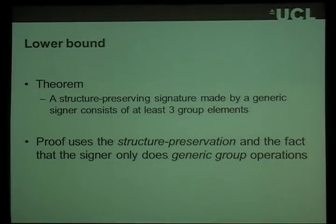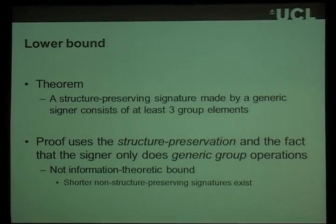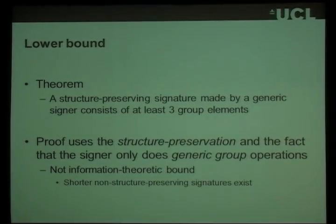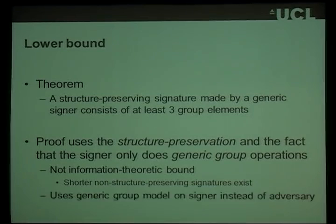The proof really uses structure-preservation in an essential way — specifically the fact that the signer only uses generic group operations. We need to use these properties because we already have examples of shorter signatures, but those examples reveal some exponents or use a hash function. The hash function is really good at destroying algebraic structure — it's structure-destroying, you could say. We also need to use the generic group model.